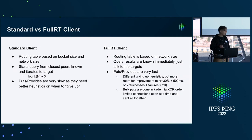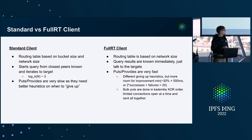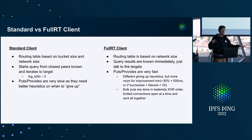There are two main clients in Kubo. The traditional client does the lookups Juan was talking about — the logarithmic hops. We've also got the accelerated DHT client, which caches the entire routing table in memory. That means lookups are really fast because you don't have to do any extra hops, but it also means you have to cache the entire routing table in memory. One big downside is that before it's even usable, you have to crawl the entire network and find all the peers — about 30,000 to 40,000 peers.